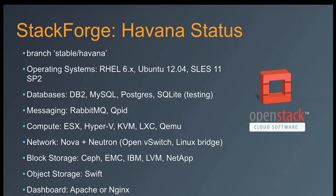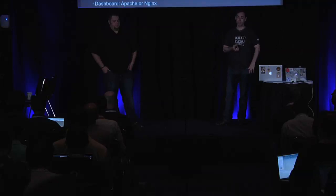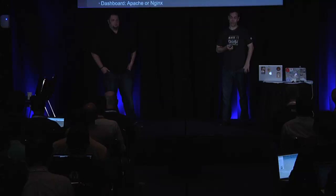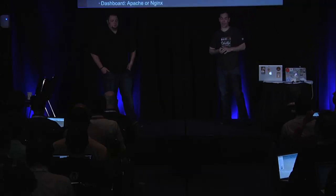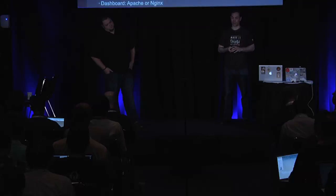For Havana, the stable Havana branch supports RHEL 6 — we're not going back to 5. We're probably not going to do Havana on 14.04. The things added for the Havana release were DB2 and Postgres, Qpid support, ESX, Hyper-V, Linux Bridge for Neutron, and several different block storage backends: Ceph, EMC, NetApp, and IBM has several product lines supported.